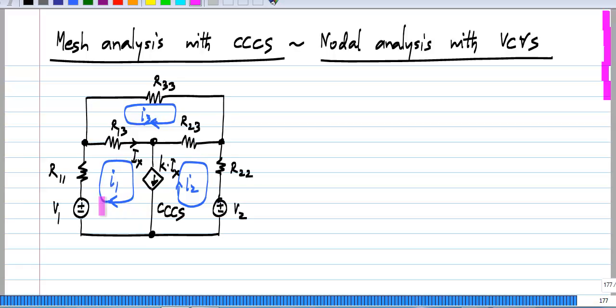It is not possible to write KVL around this. So, as with the independent current source, we form a super mesh, which consists of all the meshes which share this current controlled current source. And then, we write the equation for the super mesh.